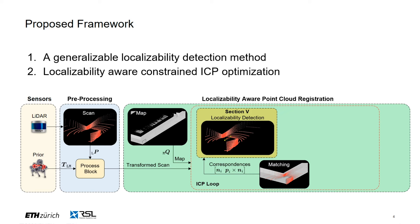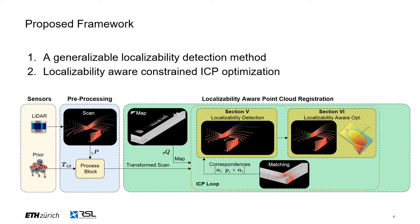The localizability information is forwarded to the localizability-aware optimization module. This module calculates the best guess motion estimates and constrains the ICP optimization to prevent LiDAR slip. The output of the optimization is then reused for further iterations of the ICP algorithm. Finally, the optimized and drift-free transformation is used to register the scan to the map.